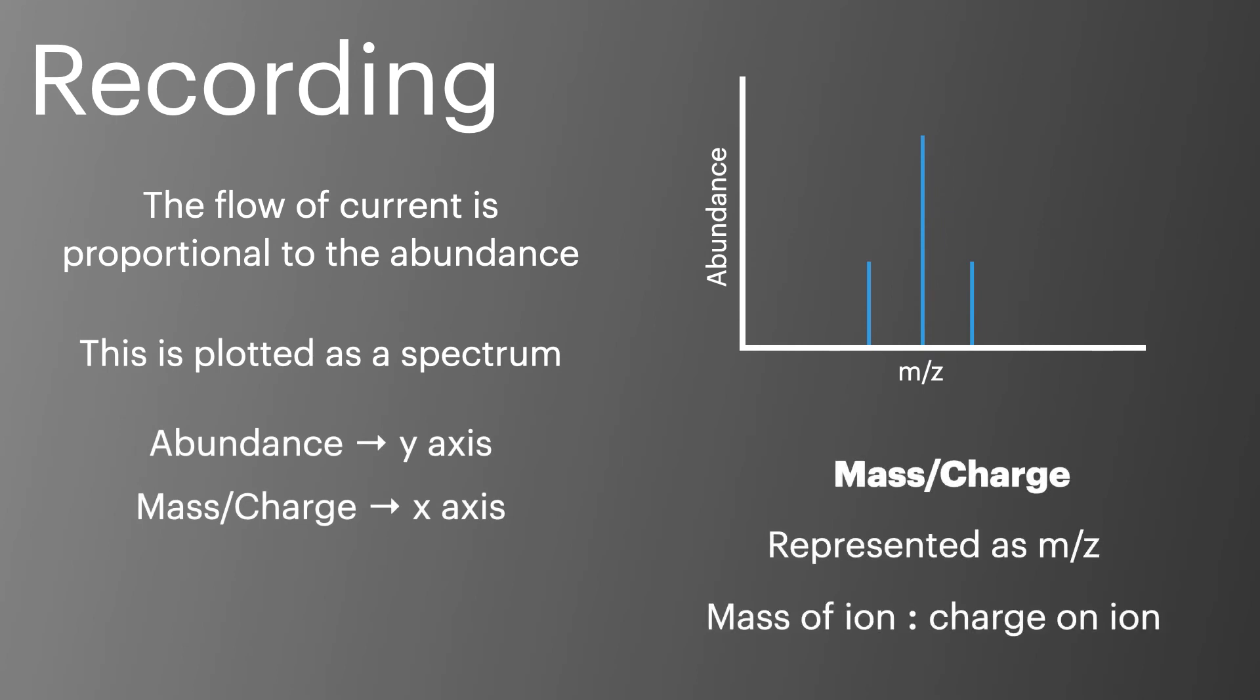Instead of plotting mass along the bottom, we plot the ratio of mass to charge. In most cases, this represents the mass of the ion, as the charge on the ion will usually be plus one. However, in some cases, the ion may have a charge which is greater. These cases are rare at A-level.